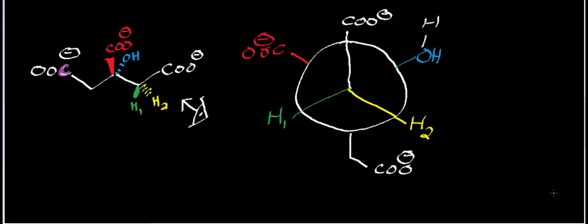In the last video we looked at the mechanism of aconitate hydratase, also referred to as Aconitase. If you're watching this in a playlist, you can go back and look at that mechanism. What we found in the last video was that aconitate hydratase occurs in two mechanistic steps: number one, there is a beta elimination that occurs, and that's followed up by a hydration of an alkene. The alkene happened to be cis-aconitate.